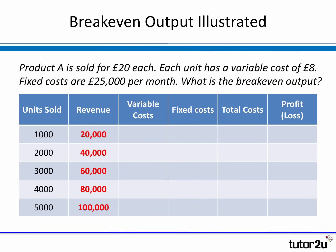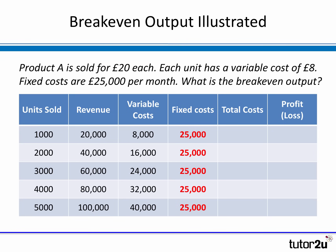First, we calculate revenues by multiplying the units sold by £20 per unit to give total revenues. Next we calculate variable costs — it's the variable cost per unit of £8 times by the units sold. At 1,000 units that gives £8,000 of variable costs. So at 1,000 units sold, our contribution is £20,000 of revenue less variable costs of £8,000, giving a contribution of £12,000.